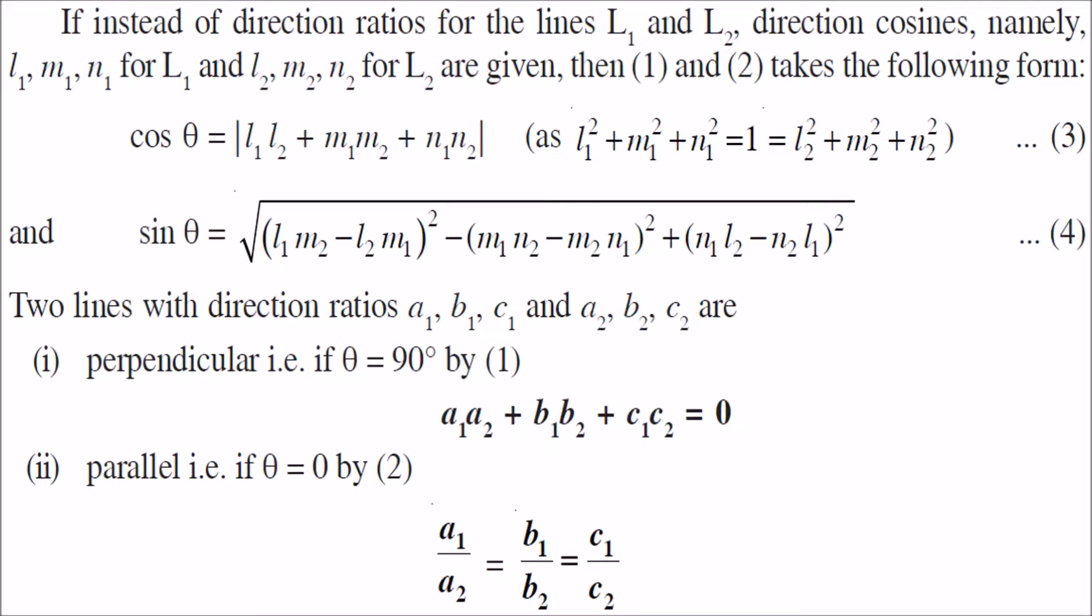Instead of the direction ratios from the previous discussion, if we have direction cosines L1, M1, N1 for line 1 and L2, M2, N2 for line 2, then cos theta will be L1L2 plus M1M2 plus N1N2, because we don't need the under root terms since the cosines are directly provided.